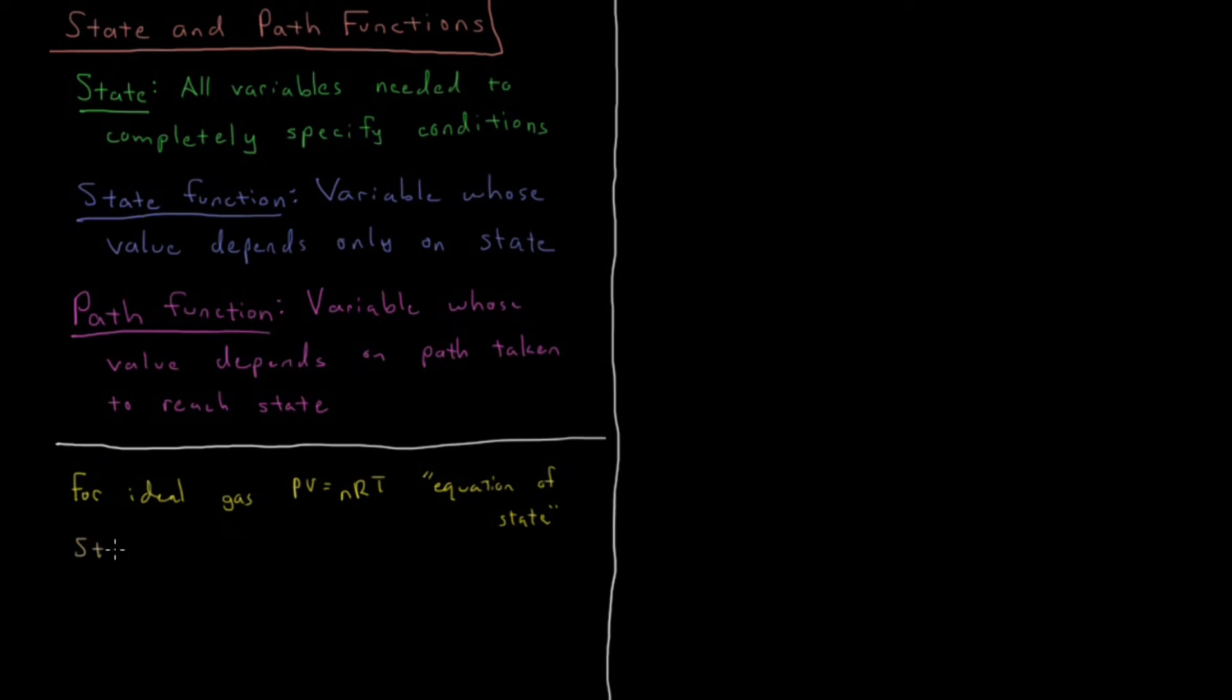So the state for an ideal gas could be specified, for example, by pressure, molar volume, and temperature. From there you could calculate energy, heat capacity, or any other property of that system you're interested in. It's completely specified if you know enough of these variables.